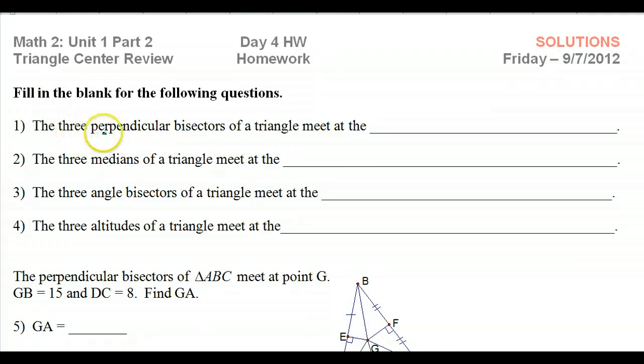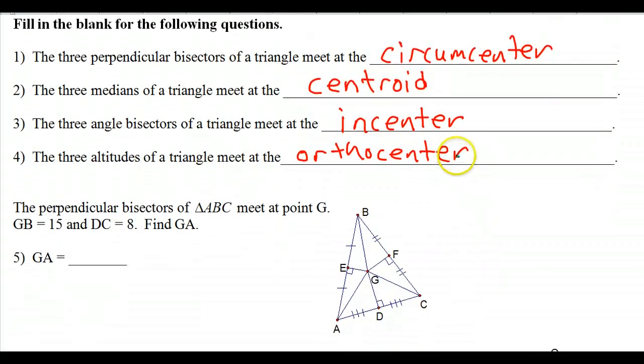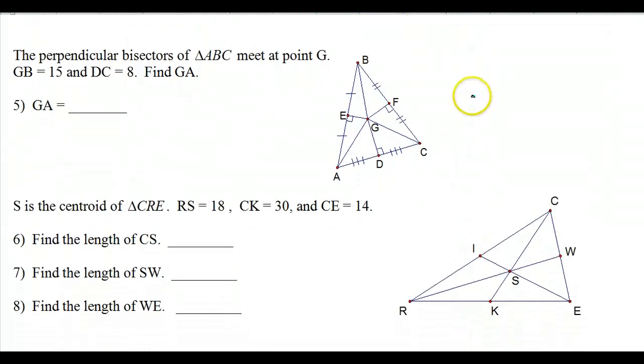Hello class. The three perpendicular bisectors of a triangle meet at the circumcenter. The three medians of a triangle meet at the centroid. The three angle bisectors of a triangle meet at the incenter. The three altitudes of a triangle meet at the orthocenter. There's really nothing to explain about these four because these are just the definitions of these four words and you just have to memorize them.